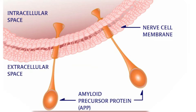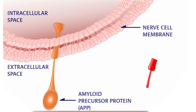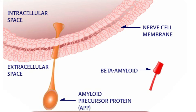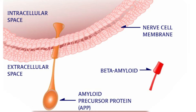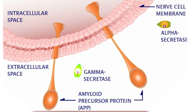Amyloid plaques consist of beta amyloid, a protein fragment of another larger protein called amyloid precursor protein, or APP. APP is found in most cell membranes in our bodies and is approximately 765 amino acids long. The exact spot where the APP molecule is cut in the nerve cells influences whether or not the beta amyloid protein fragment is formed.